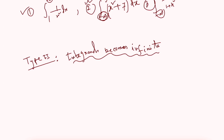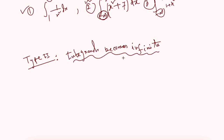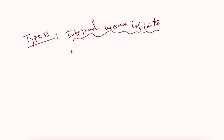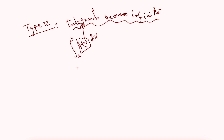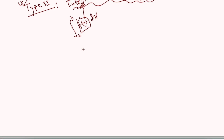In Type 2, the integrand becomes infinity. The integrand is f(x) in the integral. When the integrand becomes infinity either at the lower limit, the upper limit, or in between the limits of integration, then that type of integral is said to be Type 2.